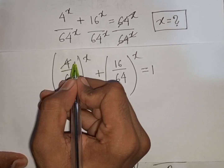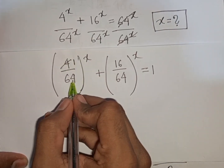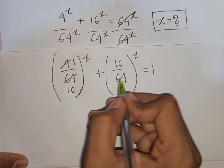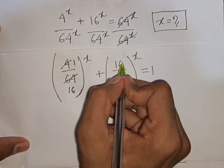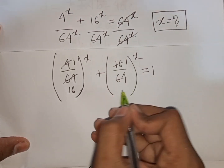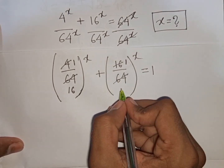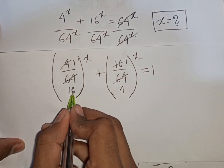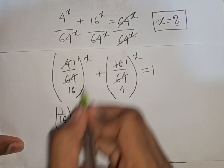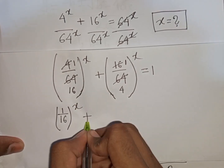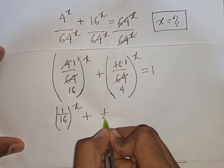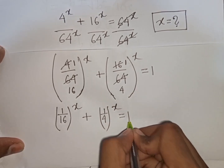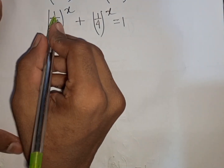Now, 4 divided by 64 equals 1/16, and 16 divided by 64 equals 1/4. So we have (1/16)^x plus (1/4)^x equals 1.